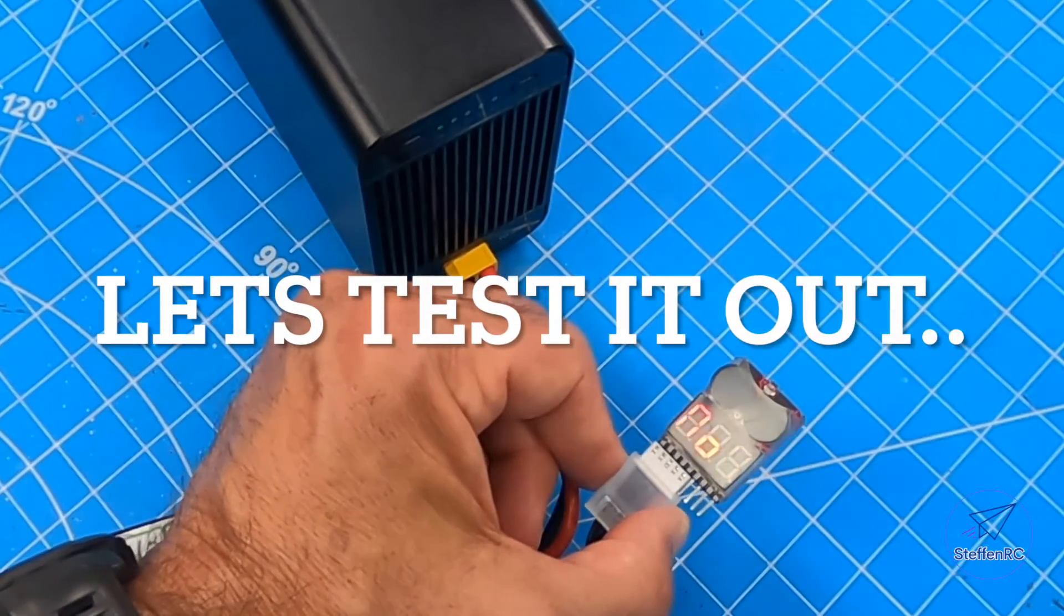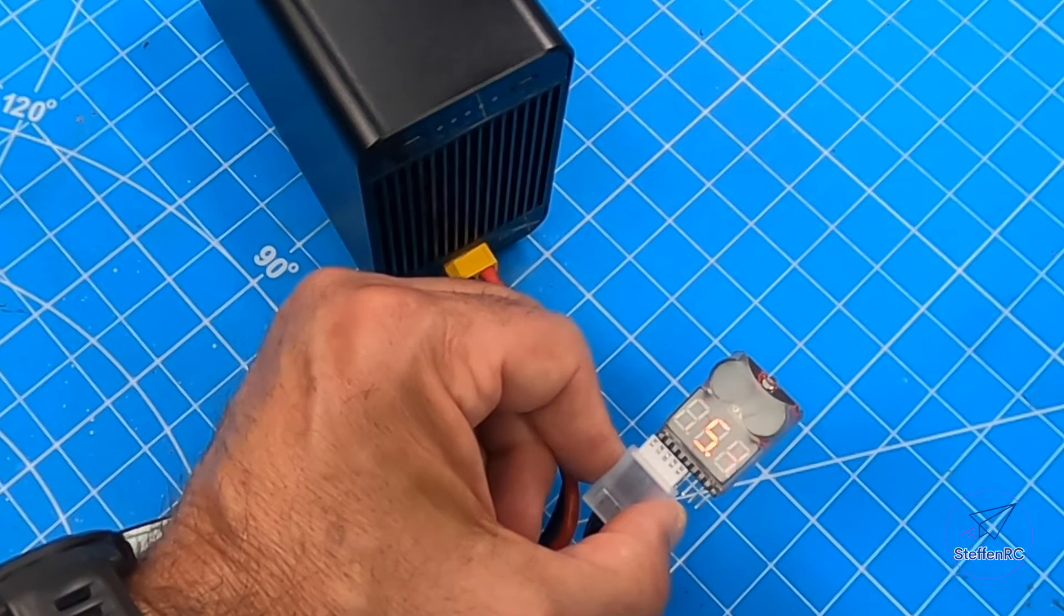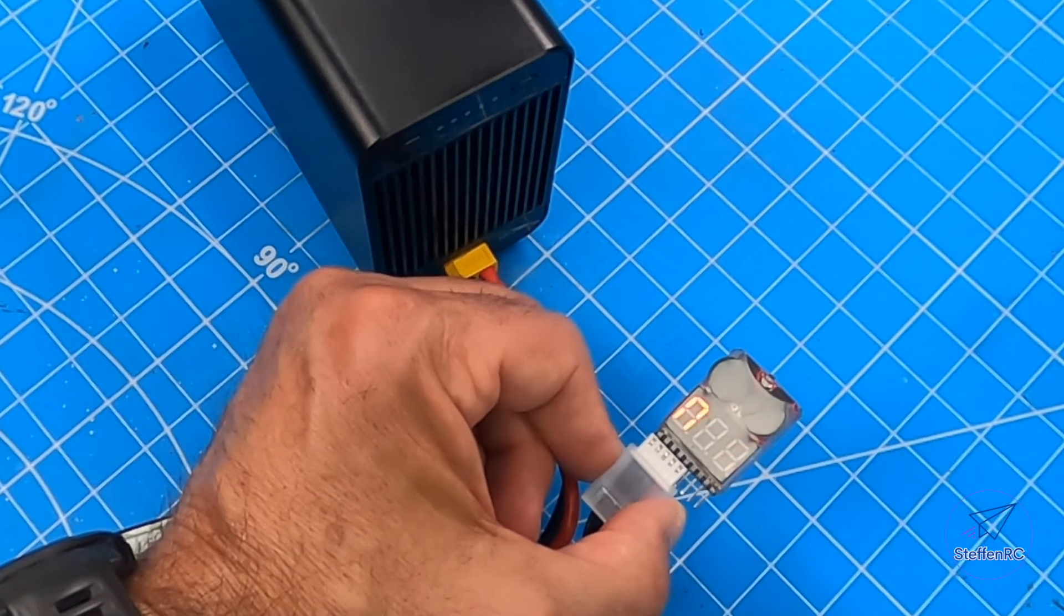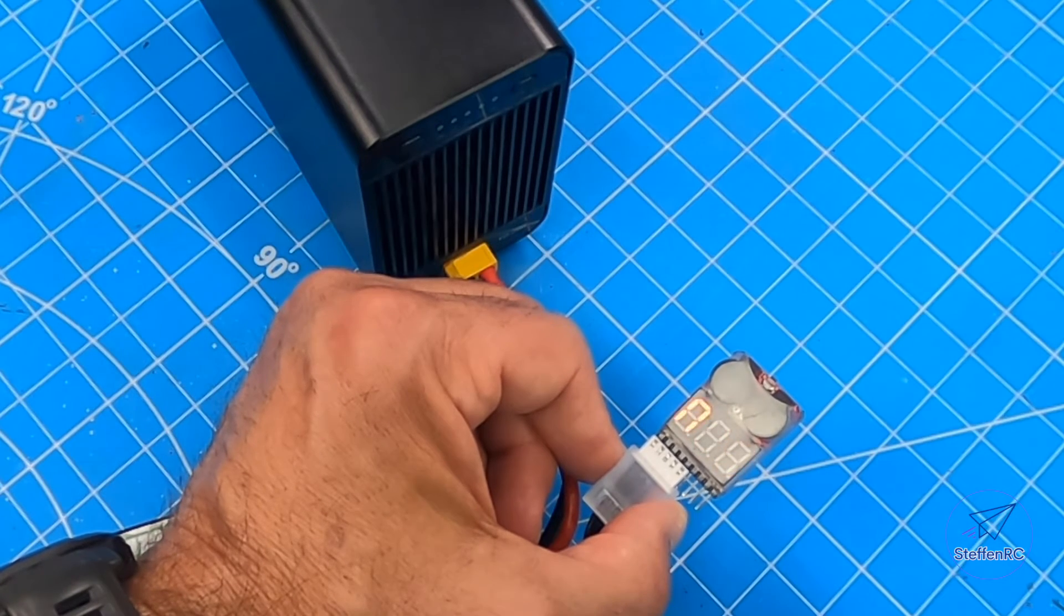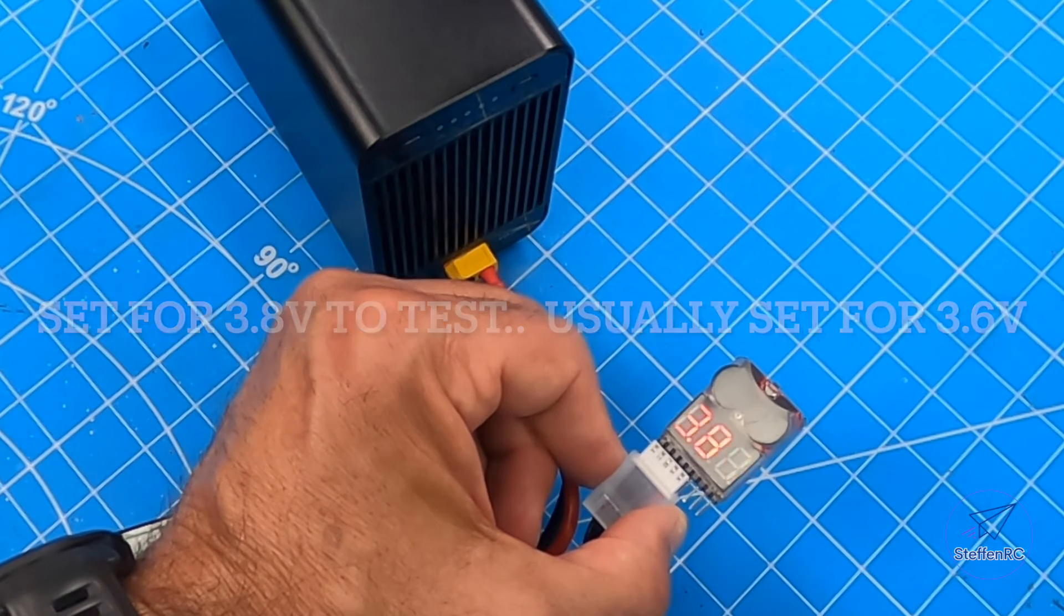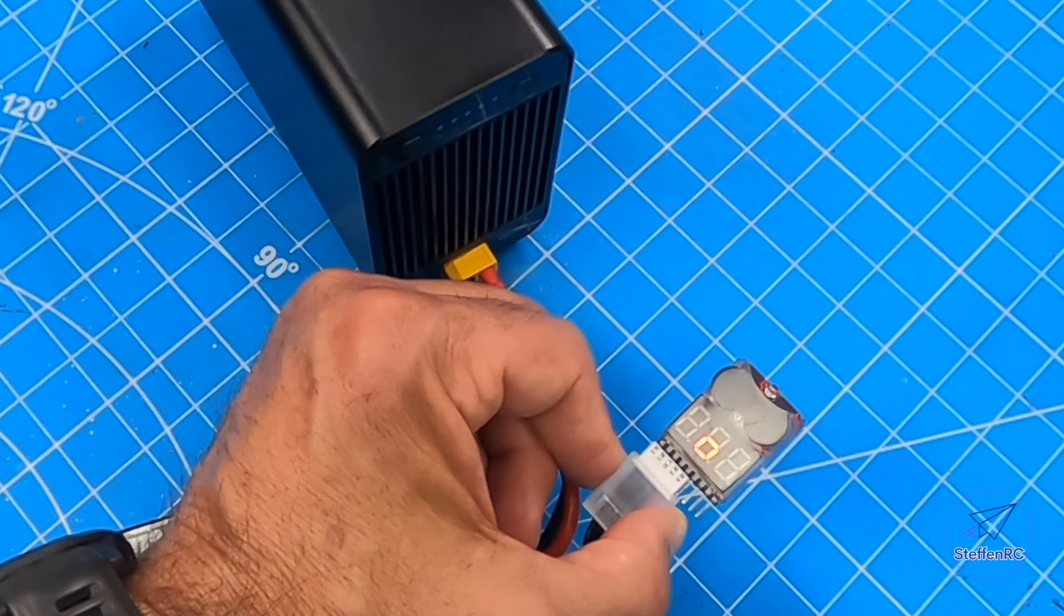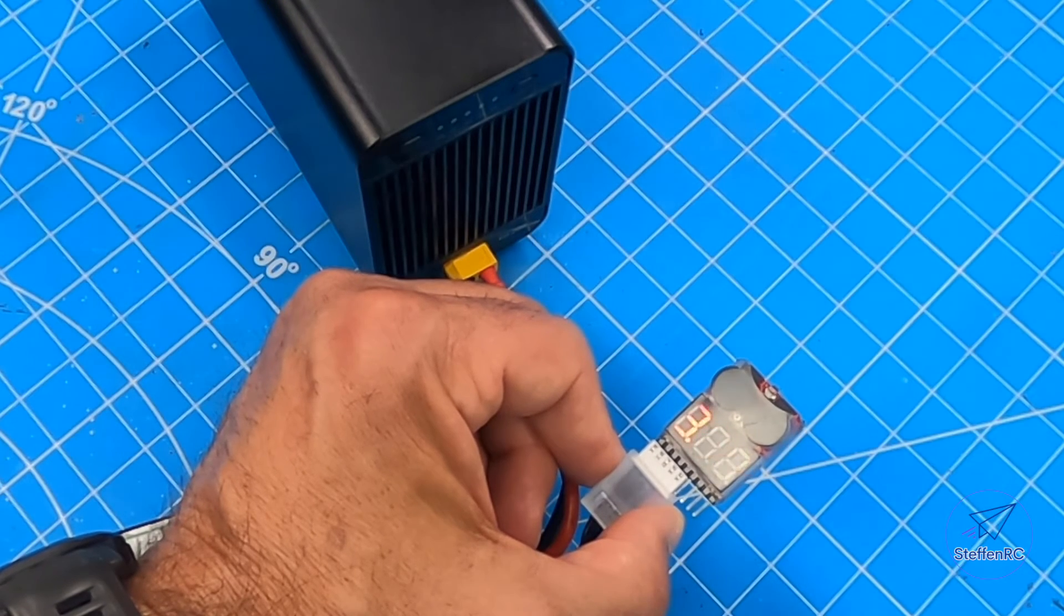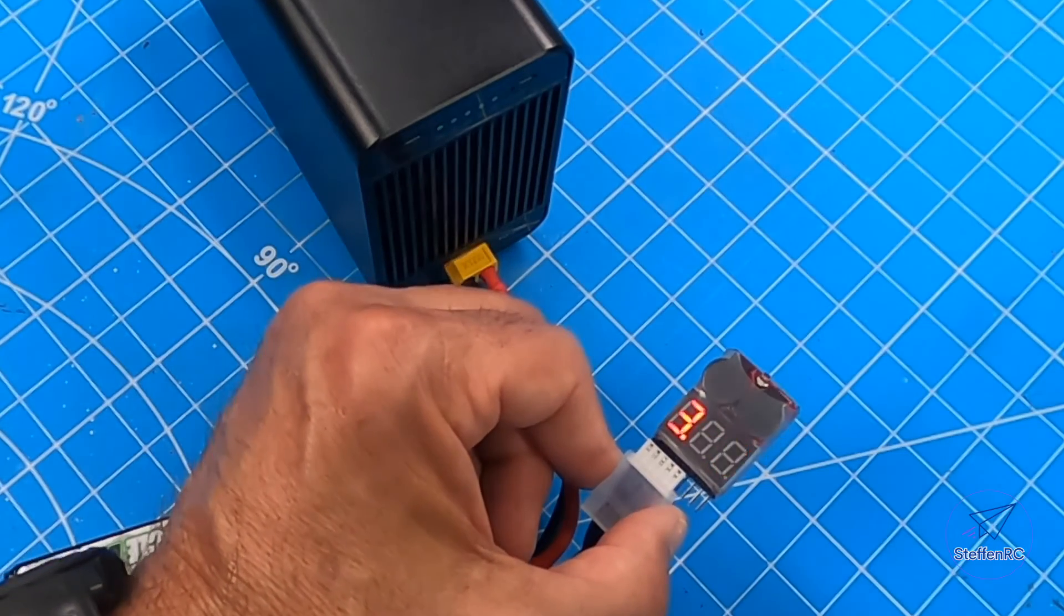All right. We have this set up on our discharger and I've set the alarm for 3.8 volts. So as soon as it gets below 3.8, the alarm will go off. I'll unplug it and you'll see that the alarm will stop. Whereas the cheap one from Amazon will just keep on beeping. Let's see what happens here.